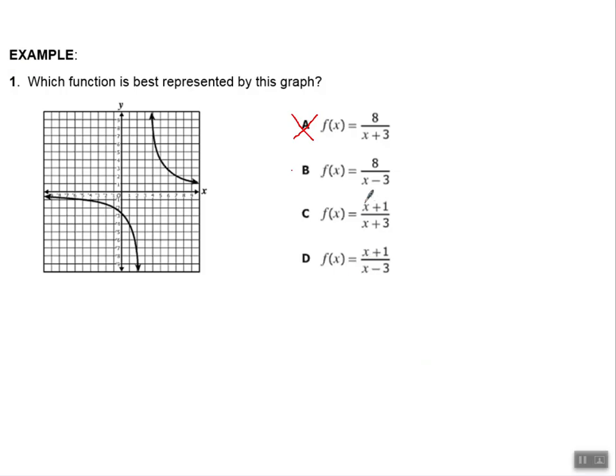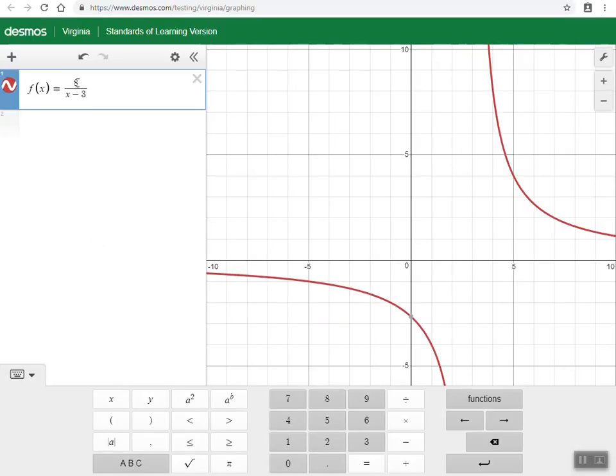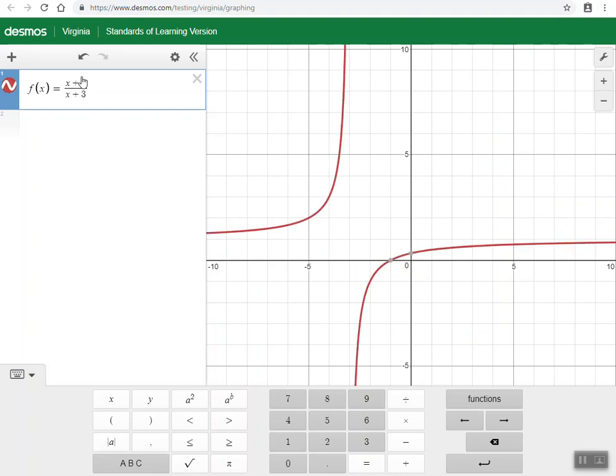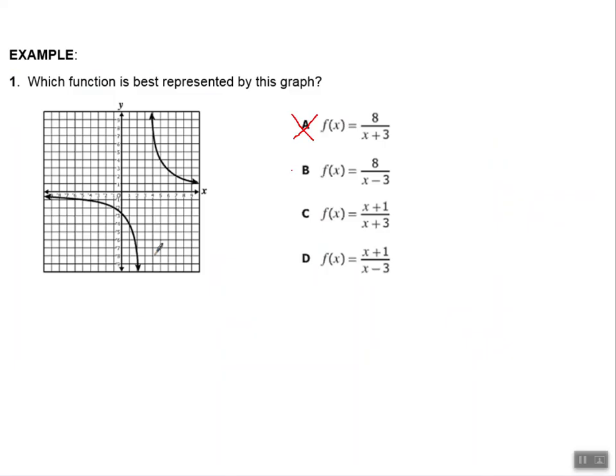So, I forgot what it was. x plus 1 divided by x plus 3. Let's see what that looks like. I'm going to go in here and change the 8 to an x plus 1, and the denominator is an x plus 3. And let's see. Yeah, that's not it. But this y-intercept and x-intercept are right here near the origin. And the graph that I have, well, it doesn't even go that way. So I know that c is not going to be correct.